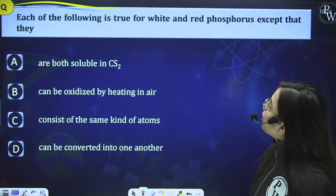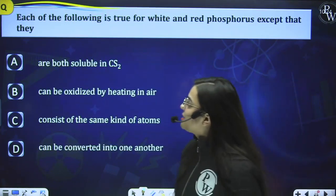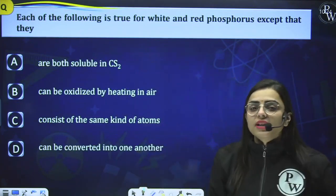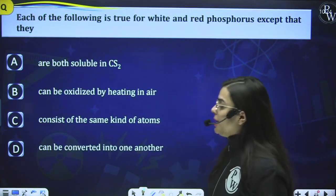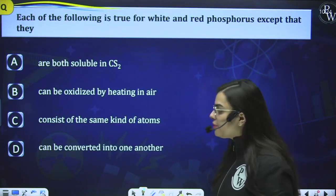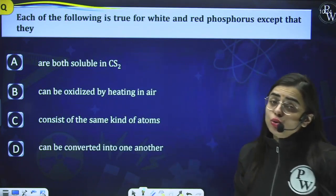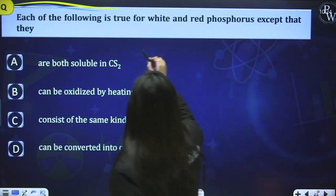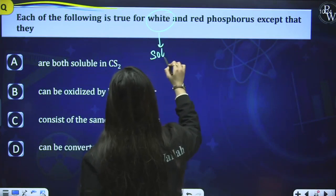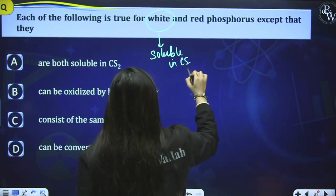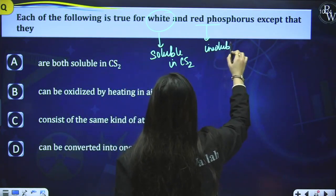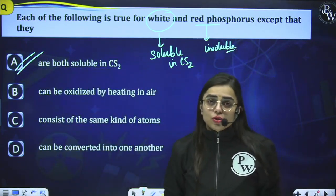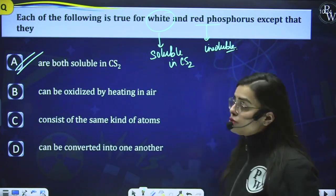Question 5: Each of the following is true for white and red phosphorus except — option A — they are both soluble in CS2. White phosphorus is soluble in CS2 while red phosphorus is insoluble. So they differ in solubility with respect to CS2. Option A is the correct answer.